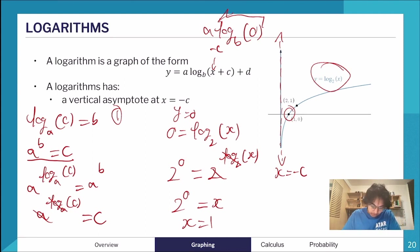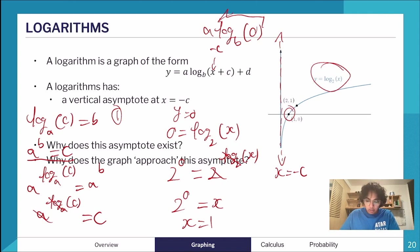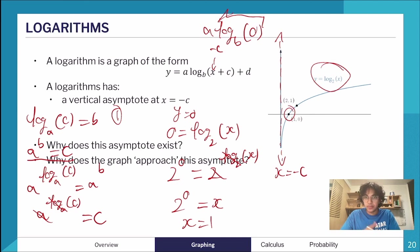The graph approaches its vertical asymptote because as x gets closer and closer to the asymptote, the log value approaches negative infinity. So the graph can never cross or touch that asymptote — it just gets closer and closer but never reaches it.